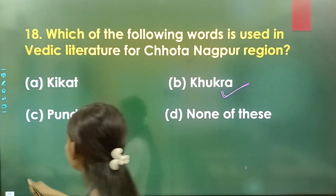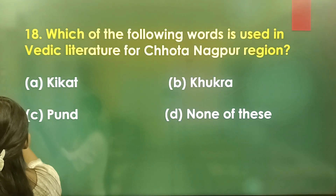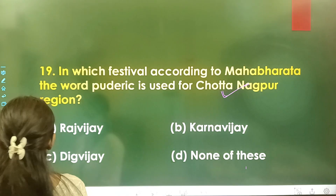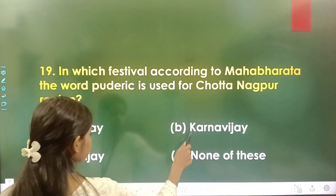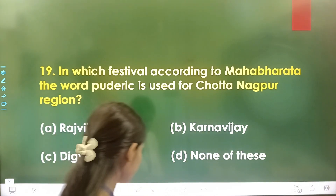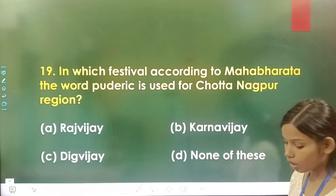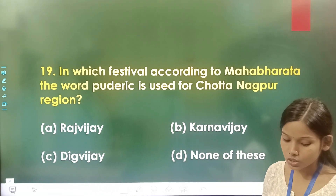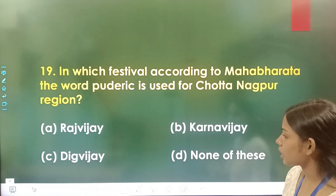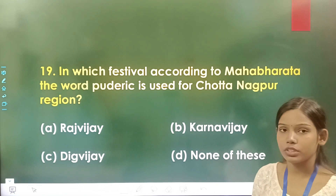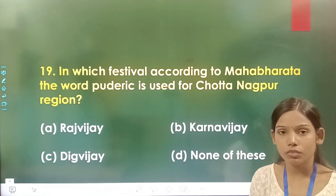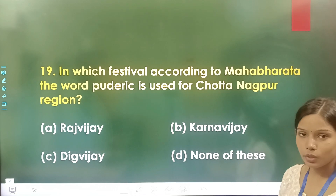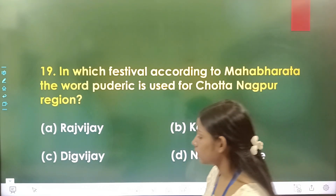Question number 19: According to the Mahabharat, in which festival is the word 'Puderic' used for the Chhota Nagpur region? Option A is Ran Vijay, option B is Karan Vijay, option C is Dig Vijay, and option D is none of these. The correct answer is option C, Dig Vijay.